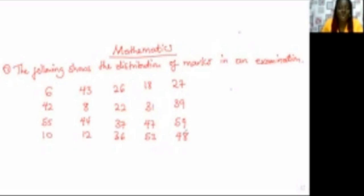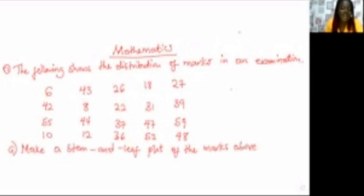The following shows the distribution of marks in an examination. The marks are: 6, 42, 55, 10, 43, 8, 44, 12, 26, 22, 37, 36, 18, 31, 47, 53, 27, 39, 59, and 48. So these are the distributions. Take a stem and leaf plot of the marks above.